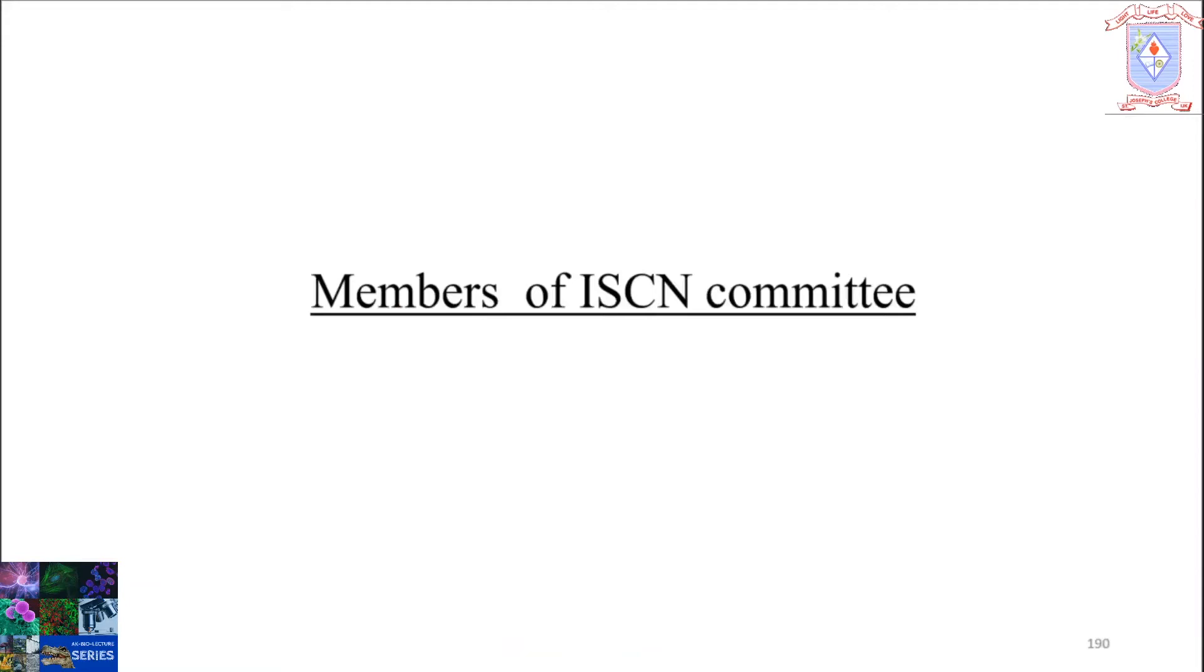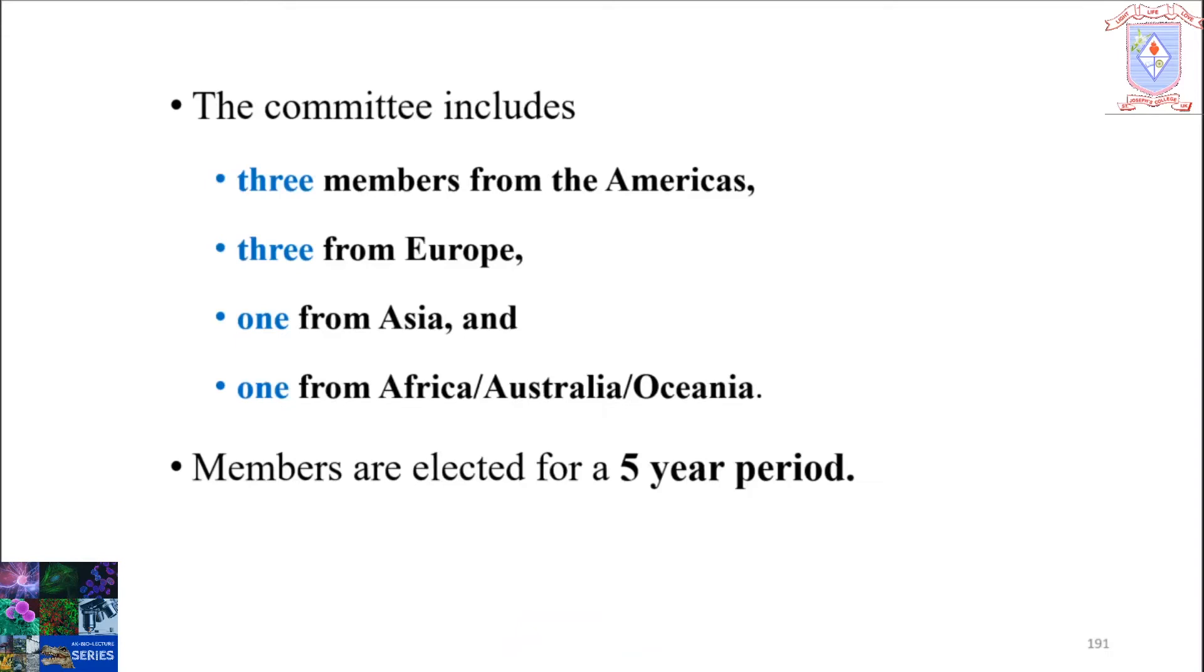Let's discuss the members of the ISCN committee. The committee includes three members from America, three from Europe, one from Asia, and one from Africa or Australia or Oceania. Members are elected for a period of five years unless demand earlier changes.